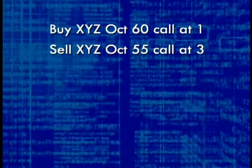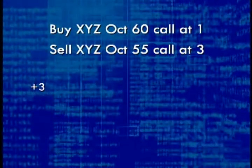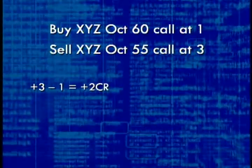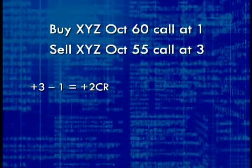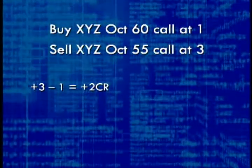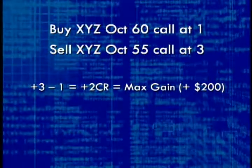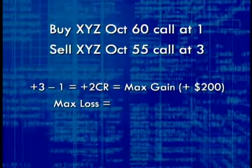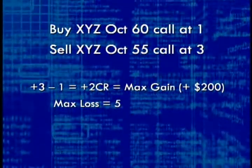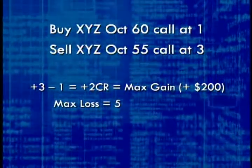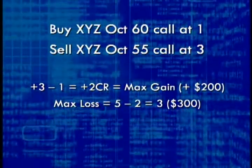Let's apply these rules. The investor purchased a call for one point and sold a call for three points — receiving $300 and paying out $100. The net result is the investor received $200, so this is a credit spread. The maximum potential gain is the credit: $200. To find the largest possible loss, take the difference between the strike prices — 5 points — and subtract the credit of 2, giving a maximum possible loss of $300.